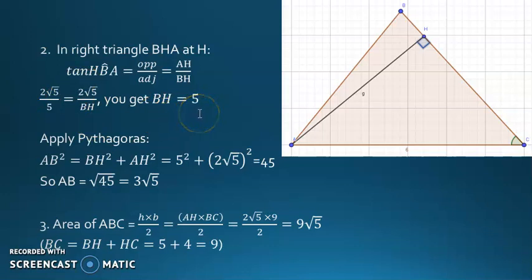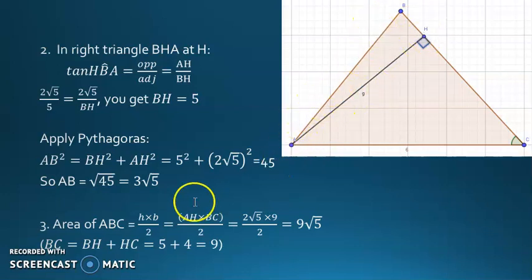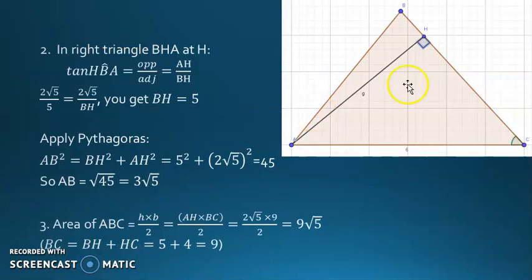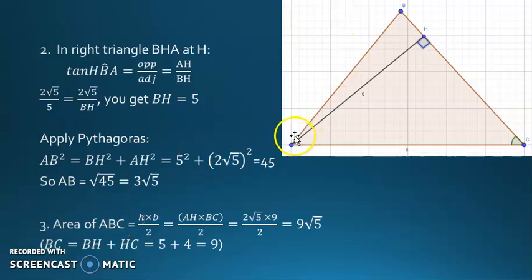Then find AB: in the right triangle you have BH and HA, so calculate AB using Pythagoras — do it by yourself. Part three: calculate the area of triangle ABC. The area is height times base over 2. Choose AH as the height, so the area is AH times BC over 2.